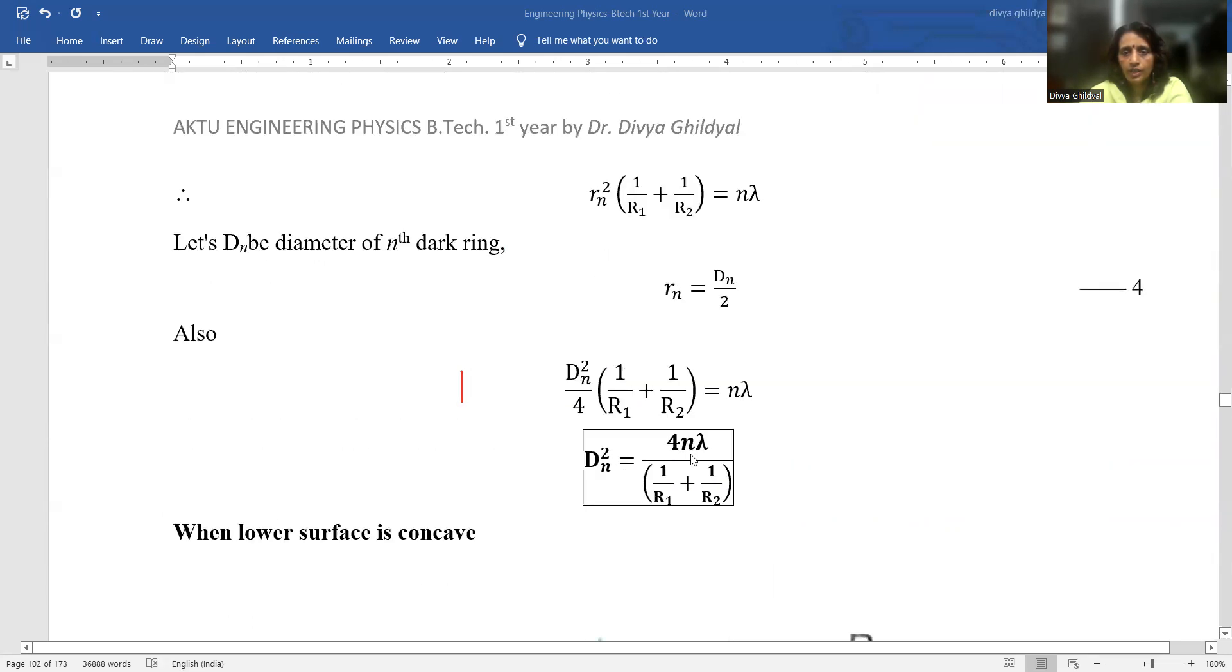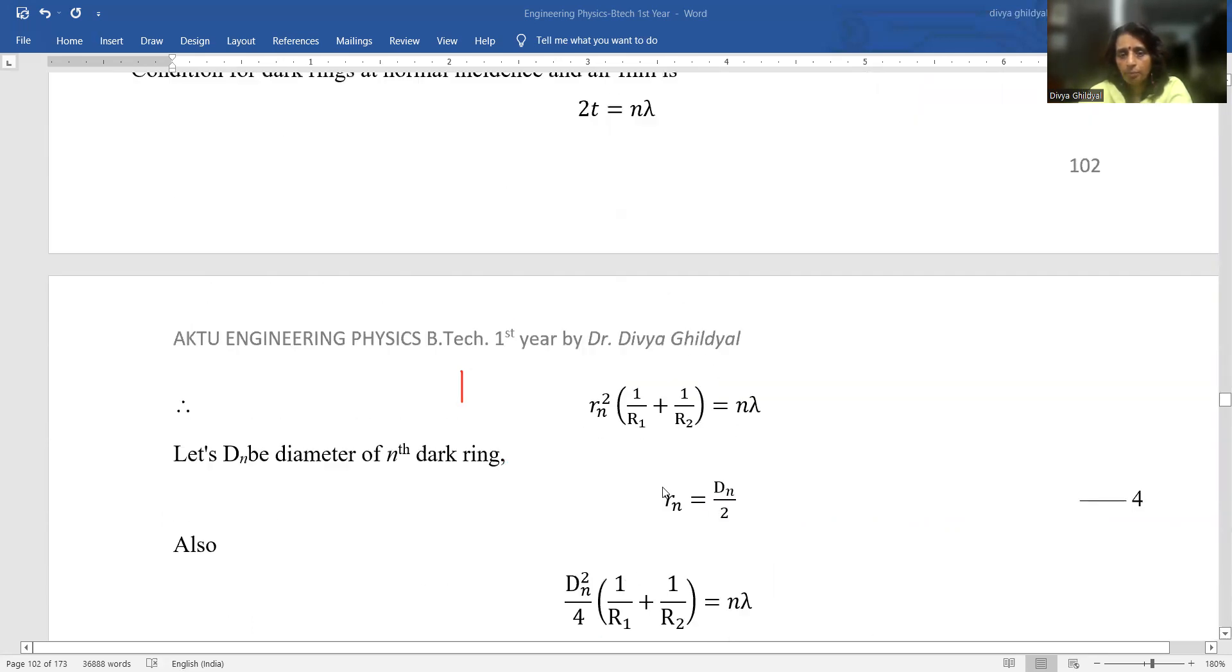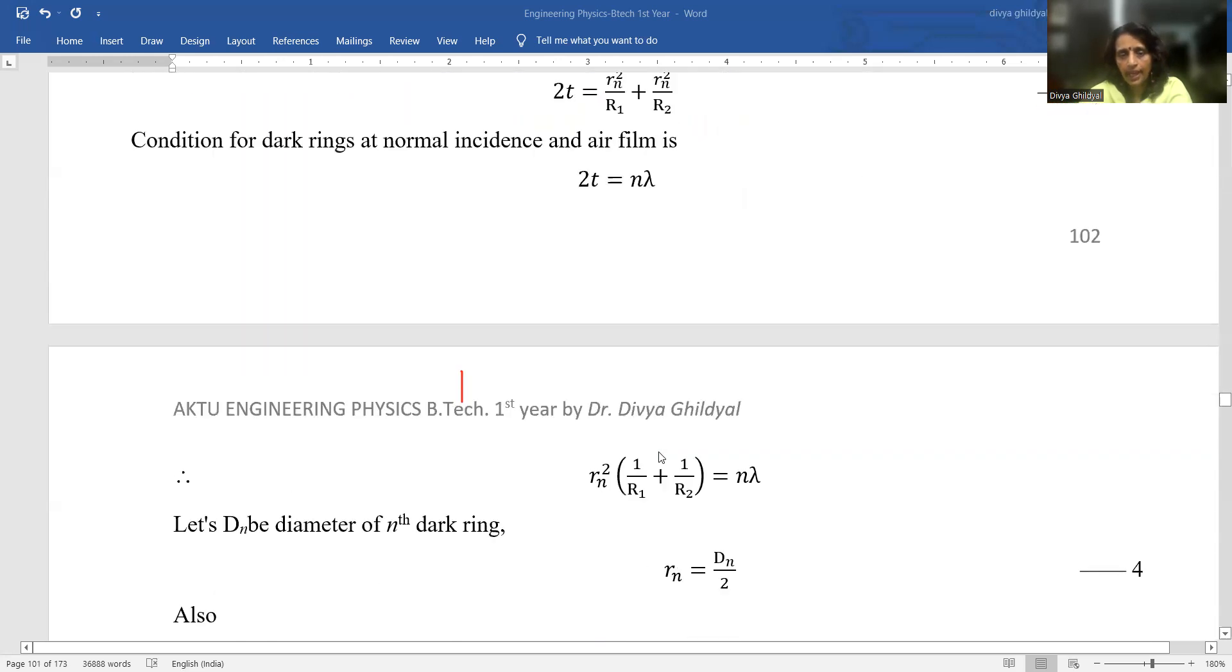You put the value of T1 and T2, R²N/2R1 + R²N/2R2 and you get the condition for diameter when both the surfaces have been kept like this curved.